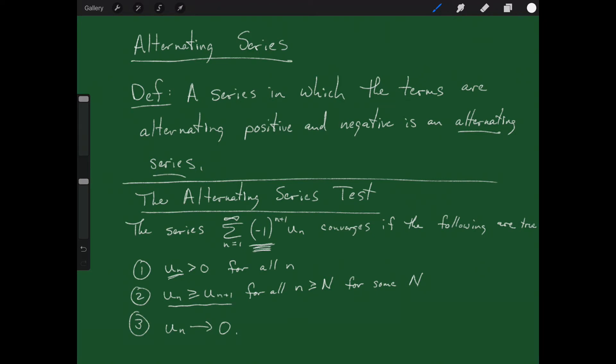And not only are they getting smaller, they go to zero. If all three of those things are satisfied — the u sub n's are positive, meaning it goes positive, negative, positive, negative as a series, and things are getting smaller and they go to zero — if all three of those are true, then your alternating series converges. If not, it diverges.